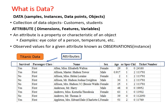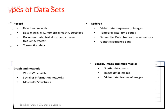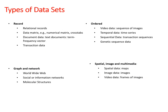Considering the Titanic dataset, each column represents an attribute — for example, 'survived' and other column values are the attributes of this data. Each row or record in the dataset is called an observation or an instance.